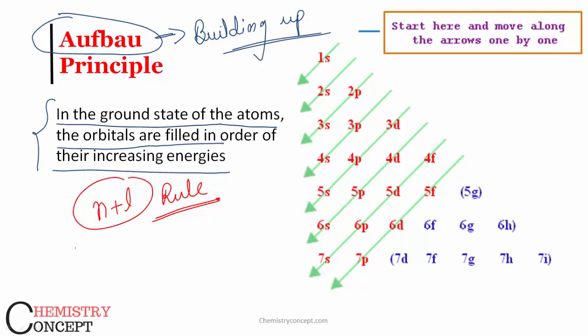Then n plus l rule comes. For 1s orbital, what is value of n? Yes, it is one. And what is the value of l? Obviously l for s orbital is zero, p orbital one, d orbital two, f orbital three.